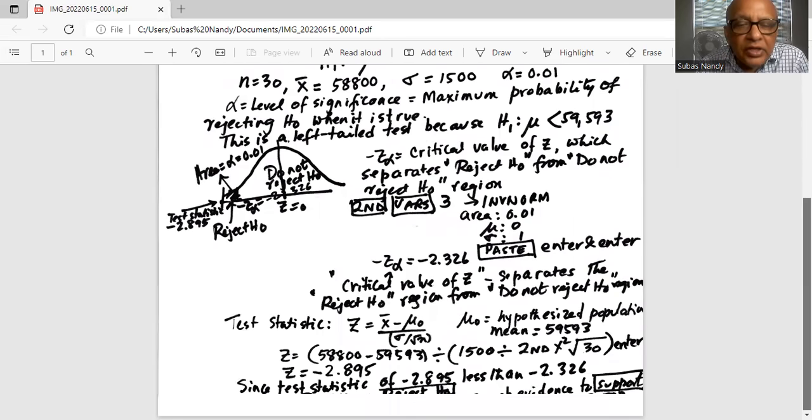Now we will calculate the test statistic, which is how far the sample mean is located from the hypothesized population mu 0, standardized or divided by the standard error or the standard deviation of the sampling distribution. So Z is equal to, in parenthesis, $58,800 sample mean minus the hypothesized population mean $59,593. Close the parenthesis.